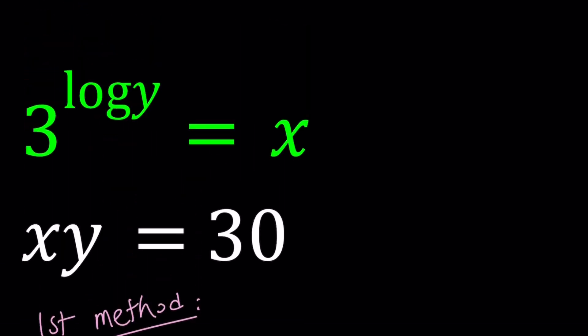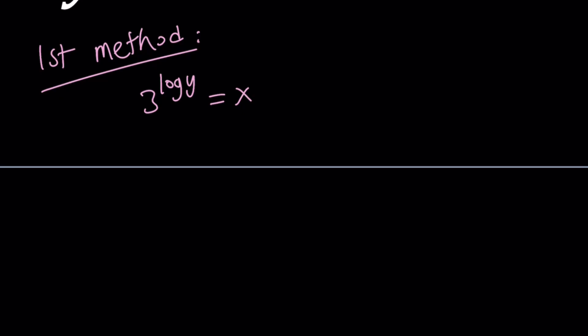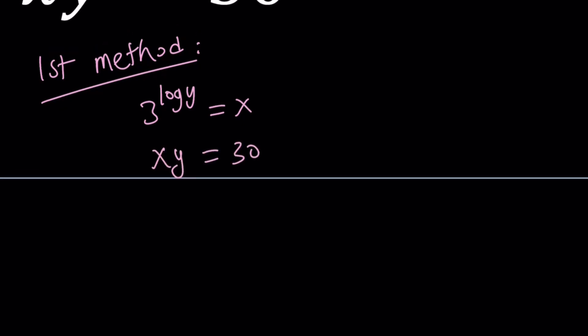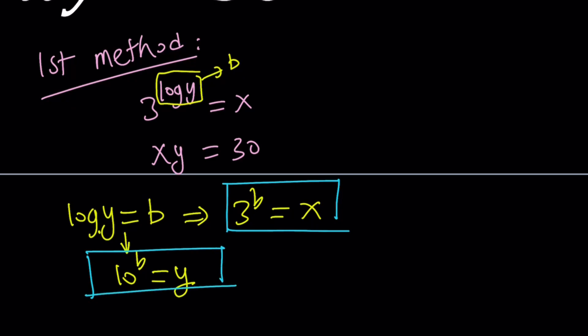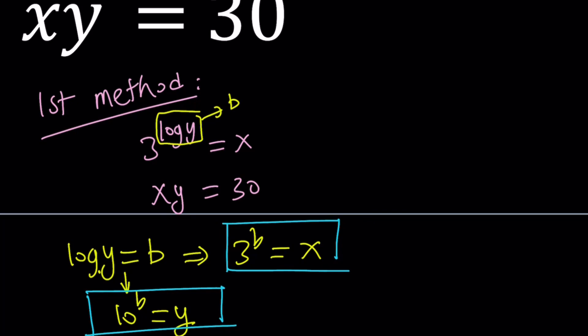In order to solve this system, first let me copy that. 3 to the power log y equals x and xy is equal to 30. For our first method, we're going to use substitution. Let's set log y equal to b. If you set log y equals b, then from here you're going to get 3 to the power b equals x. But not only that, you're also going to get something else. By using the definition of logs, since the base is 10 here, you're also going to be getting 10 to the power b equals y. Now this is important. Why? Because we got y and x as an exponential. So, we got rid of the logs.